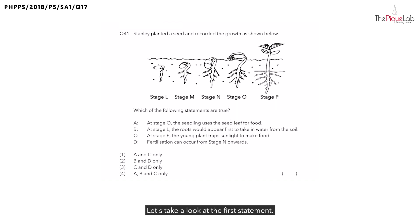Let's take a look at the first statement. At stage O, the seedling uses the seed leaf for food. This is stage O. What is that structure that I'm pointing at? Those are the true leaves. But have the true leaves fully developed like in stage P? No, the true leaves have not fully developed. Let's write that down.